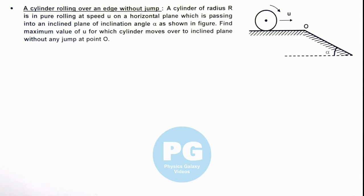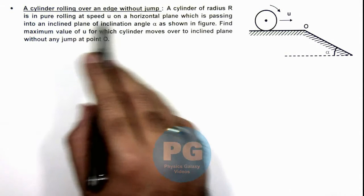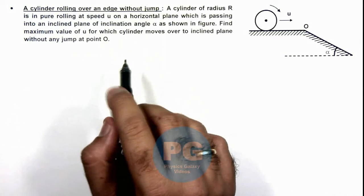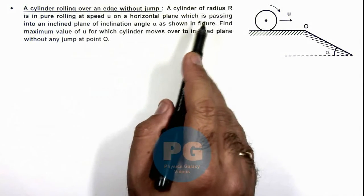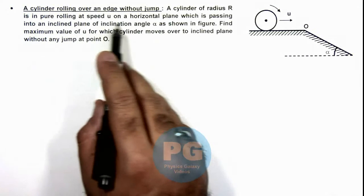In this illustration, we'll analyze a cylinder rolling over an edge without jump. We are given that a cylinder of radius R is in pure rolling at speed u.